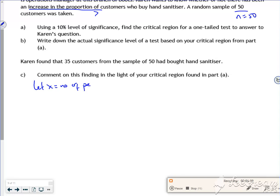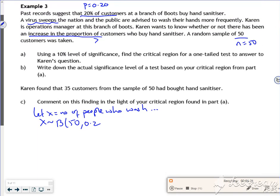Is that what it is? Number of people who wash. So X follows a binomial of 50, 0.2. I think that's right, isn't it? Yeah.